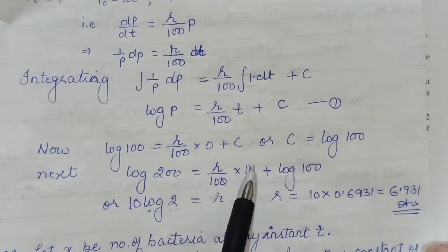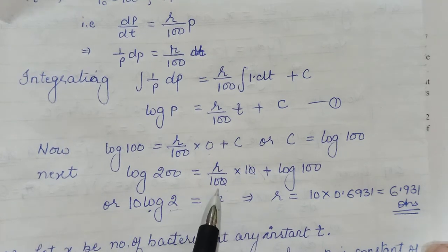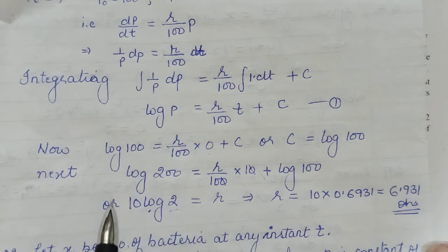And then here your 10R will cancel to leave you with a 10 in denominator, which on cross multiplying is giving me 10 log 2, value of log 2 given as 0.6931. So your rate finally becomes 6.931.